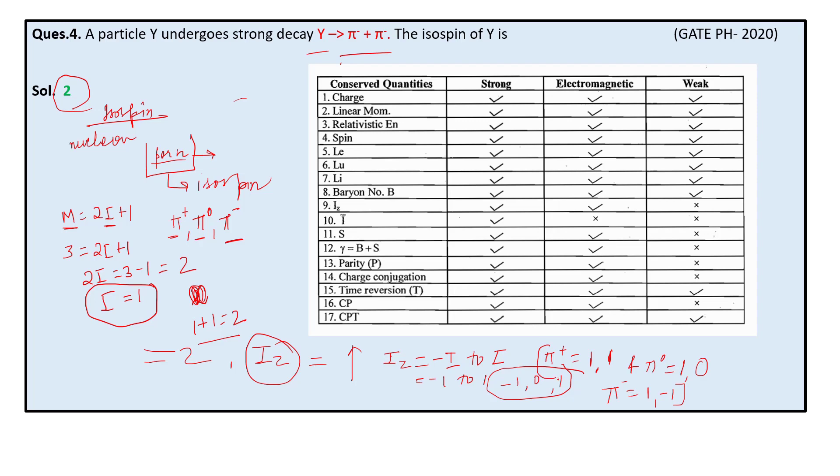That is how iz plays a very important role in determining these triplets. Thank you everyone.